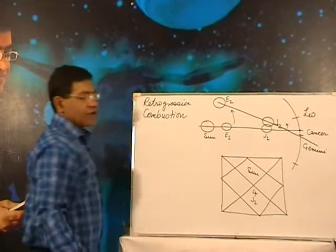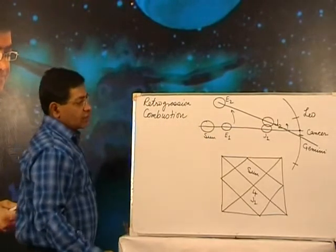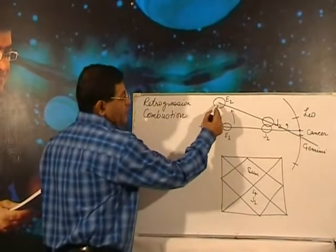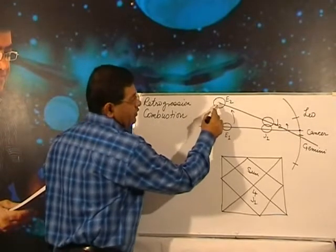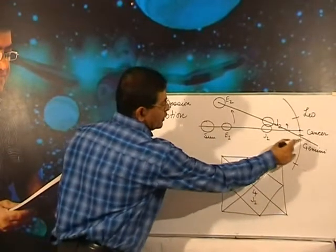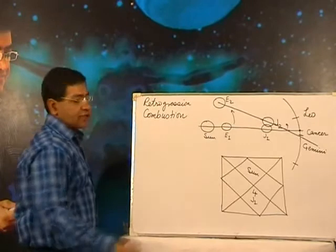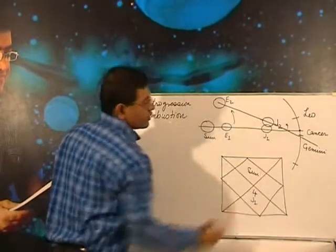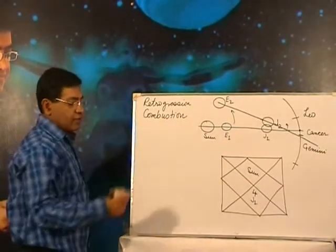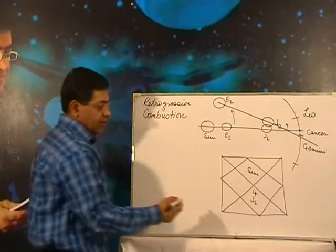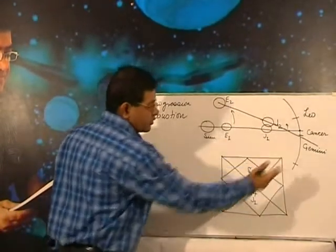After some time, J1 becomes J2. Jupiter moves forward and even the Earth also moves forward, but Earth moves at a faster speed as you know. Because the telescope is here, and now when we see from here, we find that Jupiter has actually receded back.